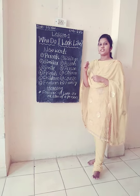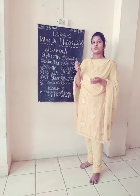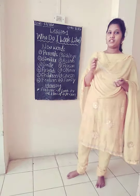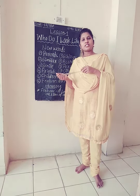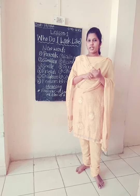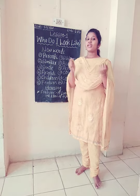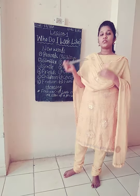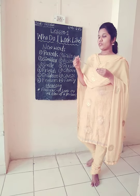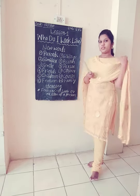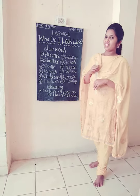Understood? Dear students, in this class, what have you learned? We learned that we look like our parents or our family members — like grandparents, uncle and aunt, cousins, and siblings. Why do we look like our parents or family members? Because we get some features from our parents or our family members. Okay, see you next class. Thank you.